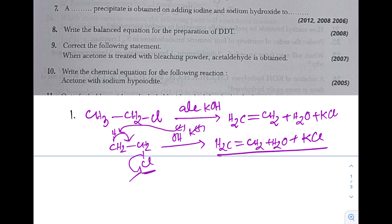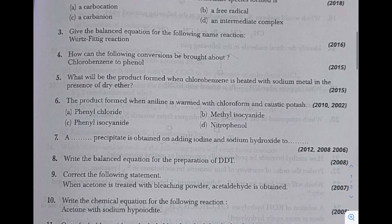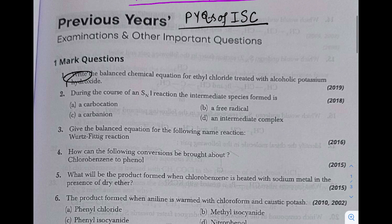Question 2: During the course of an SN1 reaction, the intermediate species formed is - this is a very easy question. SN1 proceeds through carbocation formation and SN2 proceeds through transition state formation, so carbocation will be the answer. Option A is the correct answer.